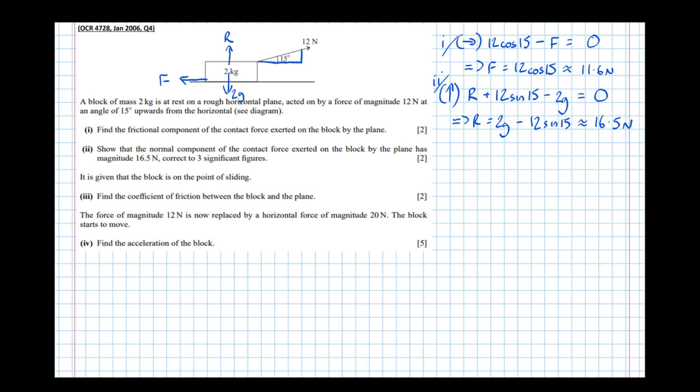Part 3 says it's given that the block is on the point of sliding. Find the coefficient of friction between the block and the plane. So the block's on the point of sliding. That means the friction's at its maximum.